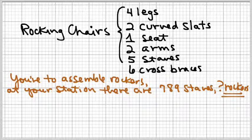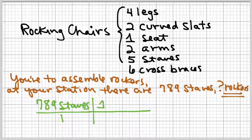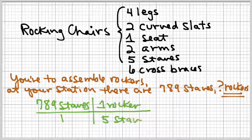So, you simply start with what you're given, the 789 staves. I know that one rocker requires five staves.